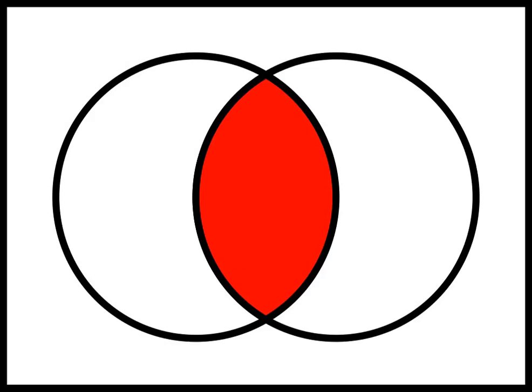Intersection is an associative operation, that is, for any sets A, B, and C, one has A∩(B∩C) = (A∩B)∩C.